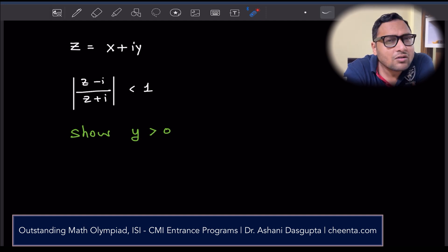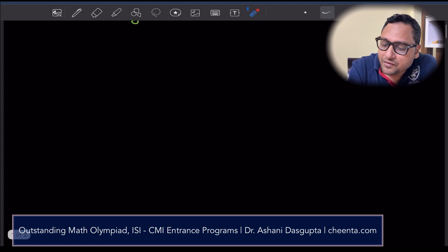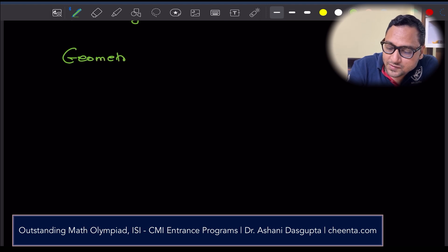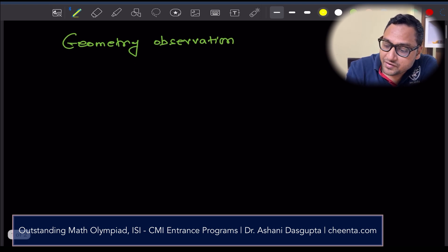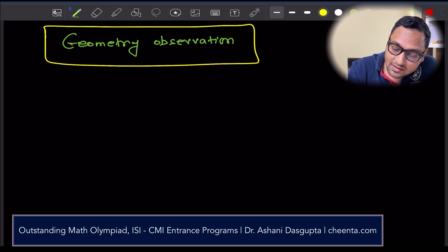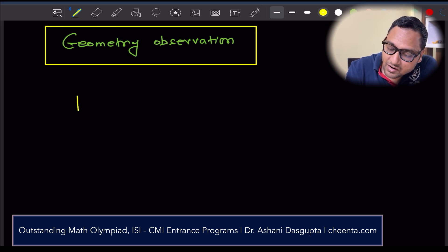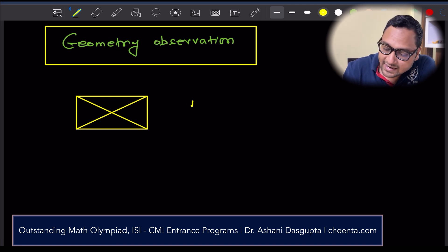How do you show that? Believe it or not, it's related to a very simple geometry observation. Let's first talk about this geometry observation because it's very useful for many problems. Suppose you have a rectangle, then both of the diagonals of the rectangle are actually equal. The diagonals are equal.